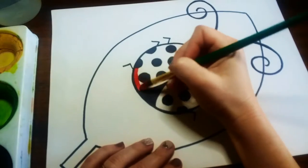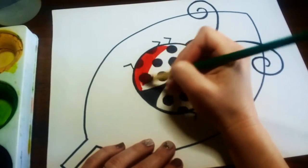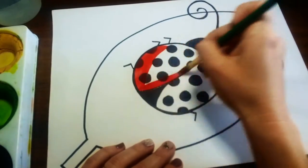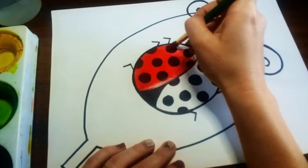And you can paint around your dots but it's not really gonna cover them up too much if you just paint right over them. So I'm just gonna paint over my dots here and paint in both of the wings of my ladybug.